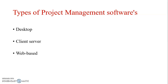Web-based software is multi-user by nature and is updated and maintained by the service provider. The last type is integrated systems, which refers to project management software that combines project management processes with other aspects of an organization. For example, an integrated project management software can be used for project planning as well as for other functions such as procurement of raw material and sales and purchase of fixed assets.